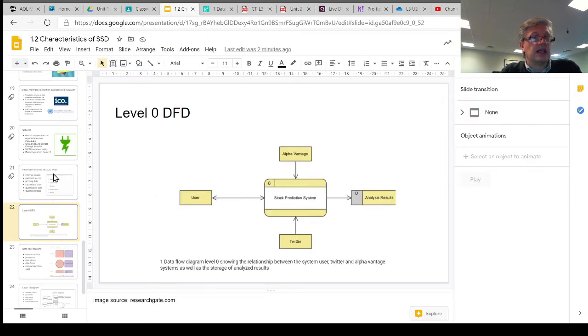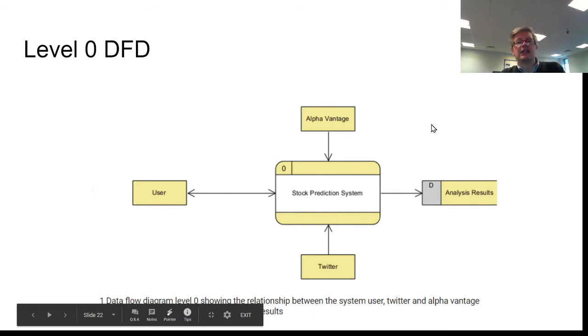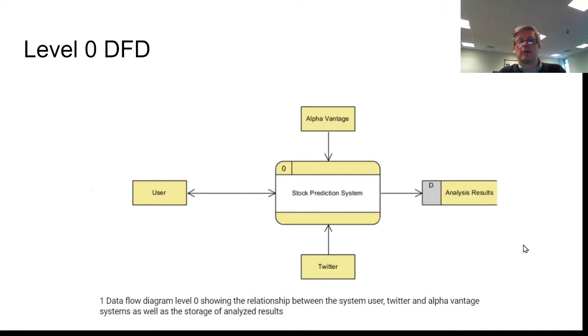Let's just have a quick look and see if we can make some sense out of these data flow diagrams. Here's a basic level 0 data flow diagram. We can see from the description at the bottom that it shows a relationship between the system user, who's in the user box, Twitter, which is in the Twitter box, and the Alpha Vantage system, which is in the Alpha Vantage box. They're called entities, but we'll get to that in a second.